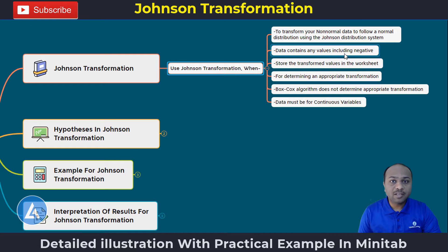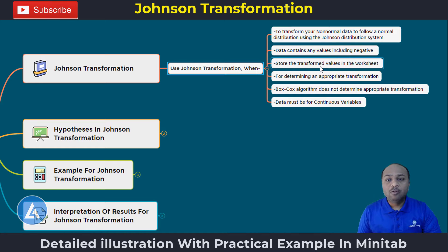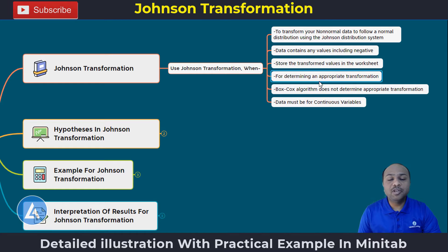As we had seen in the last video, we cannot use the Box-Cox transformation when our data contains negative values. In that case we need to use the Johnson transformation. When we want to store the transform values in the worksheet, we can also use the Johnson transformation. In many cases where Box-Cox transformation is not appropriate, we can use Johnson transformation instead.